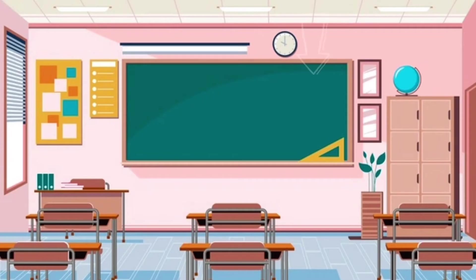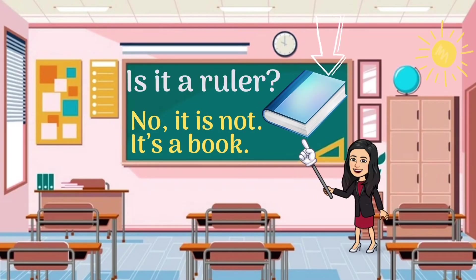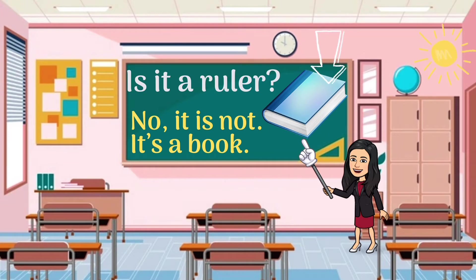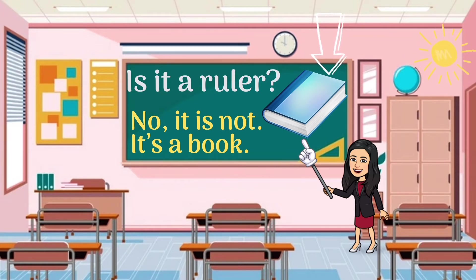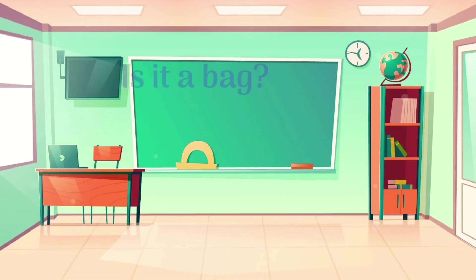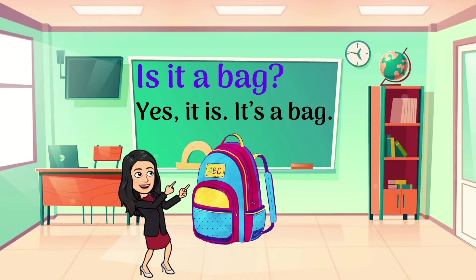Now let's see number two: 'Is it a ruler?' We need to pay attention to the picture here. Based on the picture, we can see that it's not a ruler, so we have to say 'No, it is not. It's a book.' Remember, when we answer the question we also need to put the name of the thing.